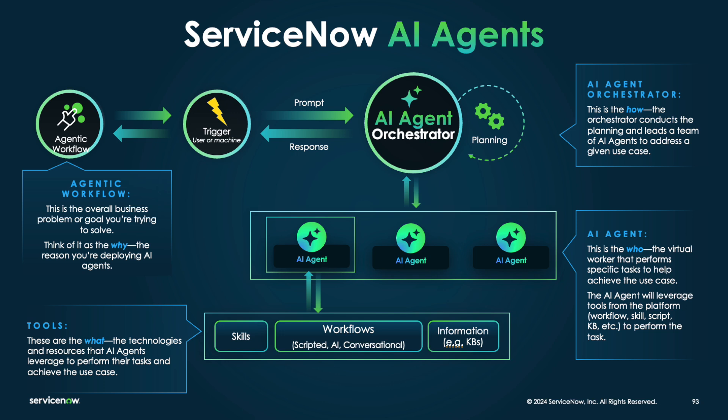That trigger kicks off the AI agent orchestrator — a virtual manager — to pick the right AI agents, which then pick the right tools: things like analysis skills, flows, scripts, and other pieces of data like a search retrieval for information, such as knowledge-based articles either on or off the instance. These capabilities come together using the power of LLM reasoning to take a set of predefined instructions defined at the workflow level, think through the solution, and then orchestrate the agents and tools until that solution is reached.